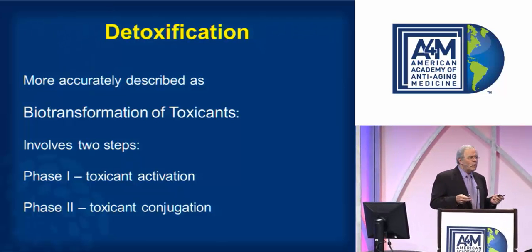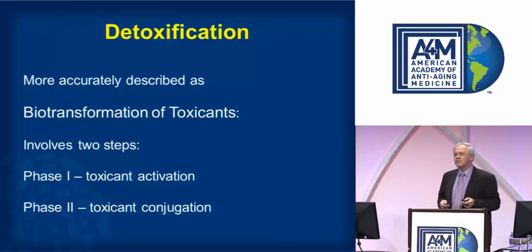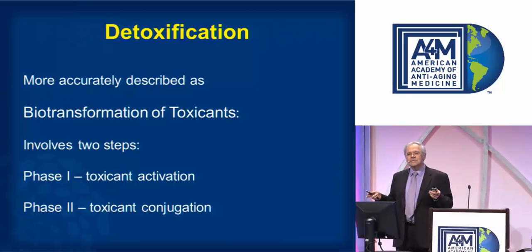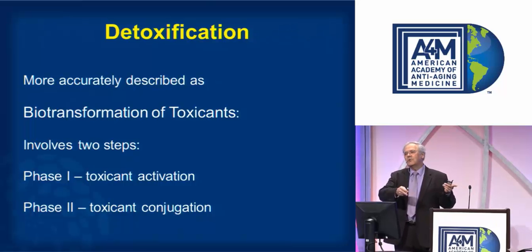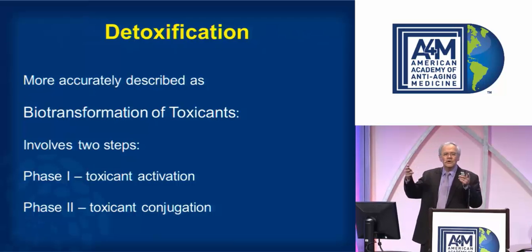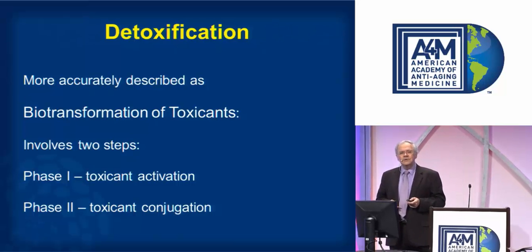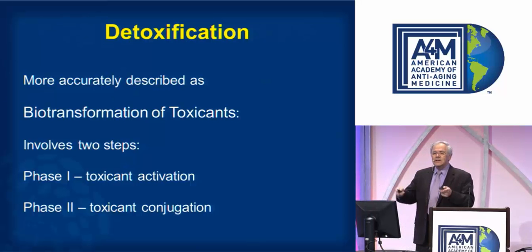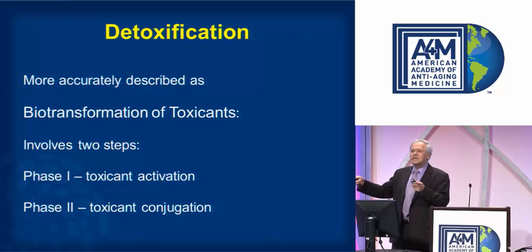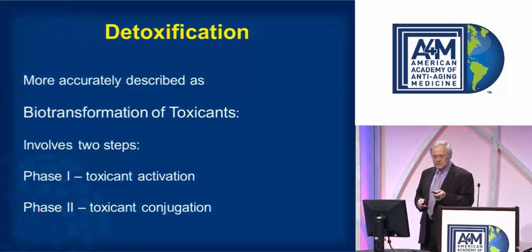Detoxification is more accurately described as the biotransformation of toxicants, and that involves two steps. Phase one is where the toxicants, whether they come from inside or outside the body, are activated by a series of enzymes, and then shunted over to phase two, where something is added to the toxicant to make it more likely to be excreted.